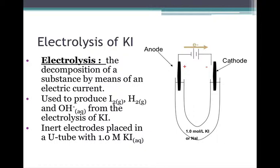You're going to hook up your electrodes and place them in the tube with your potassium iodide, with an anode and a cathode, pass the current, and you're going to get separation of your compound into the elements.